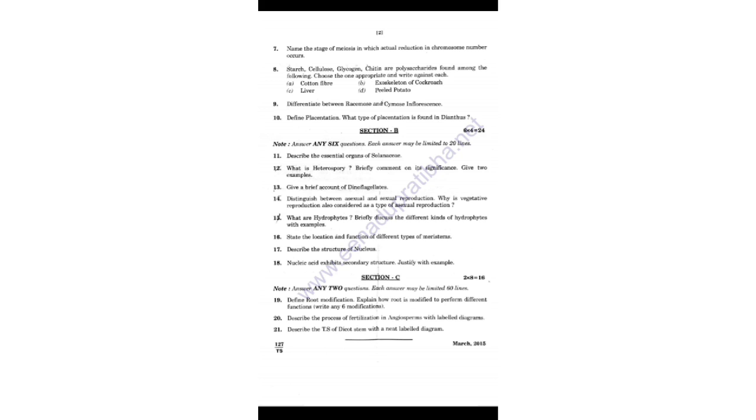Coming to Section C: 19th - define root modification and explain how roots are modified to perform different functions, write any 6 modifications; 20th - describe the process of fertilization in angiosperms; 21st - transverse section of a dicot stem.